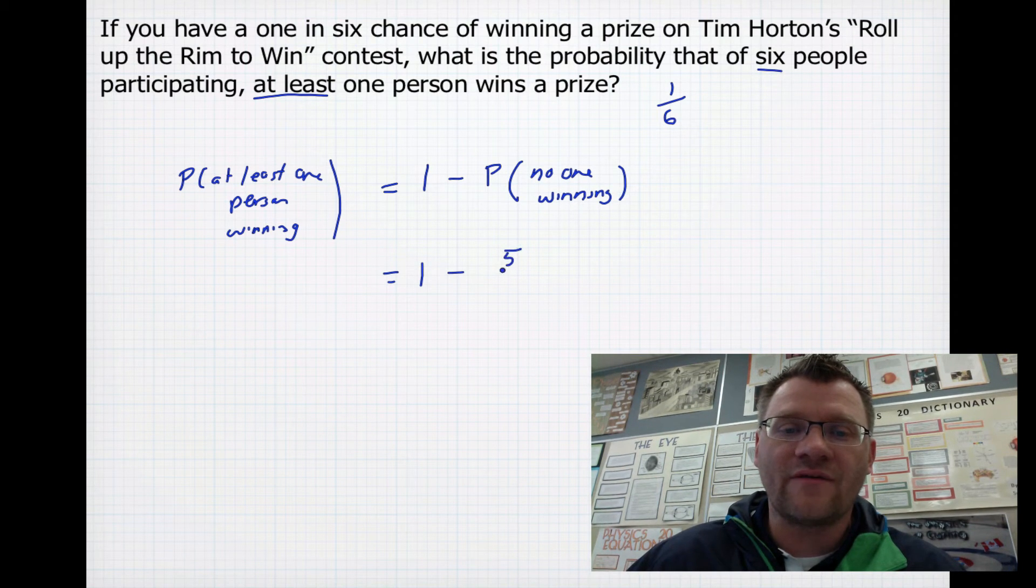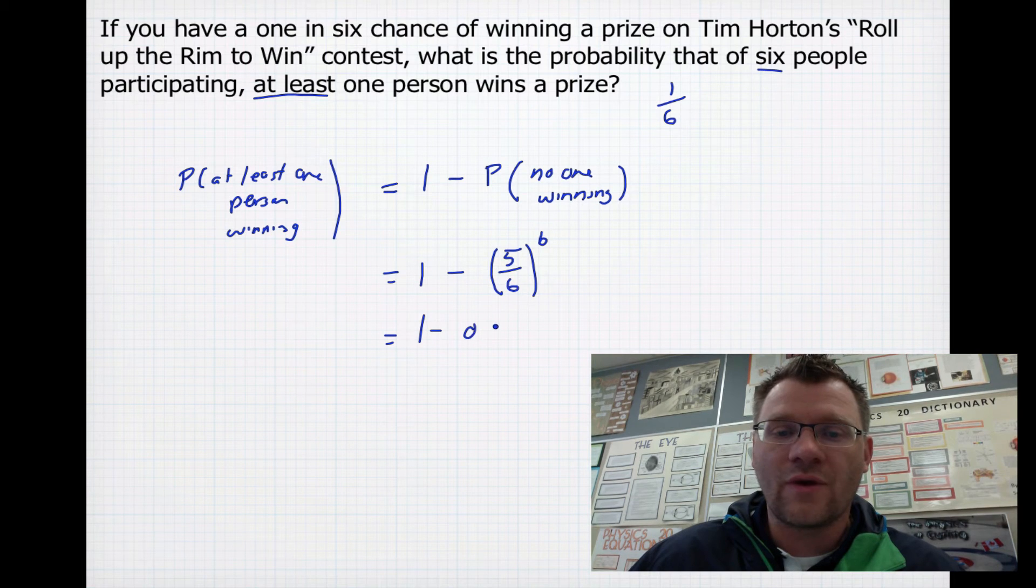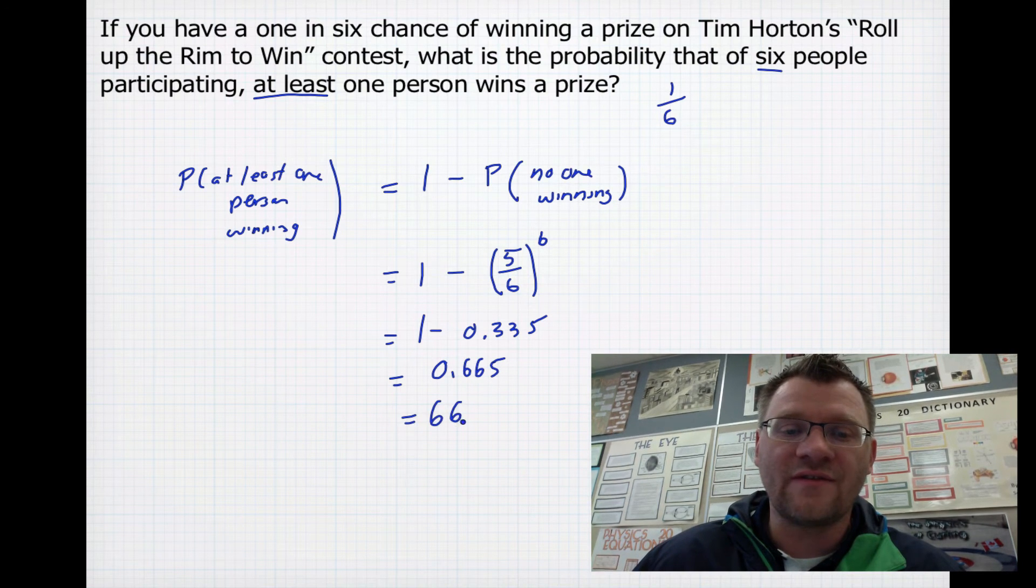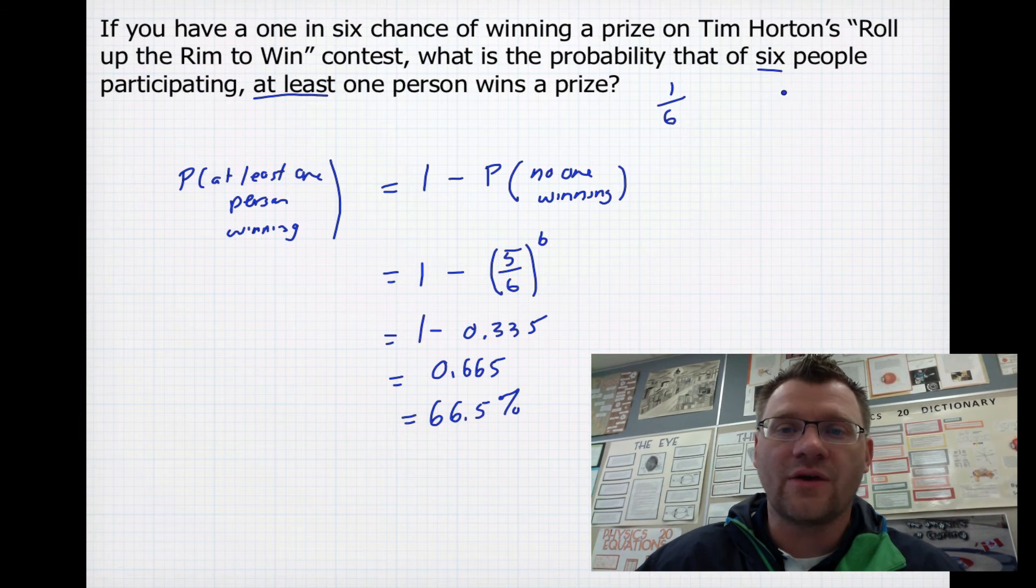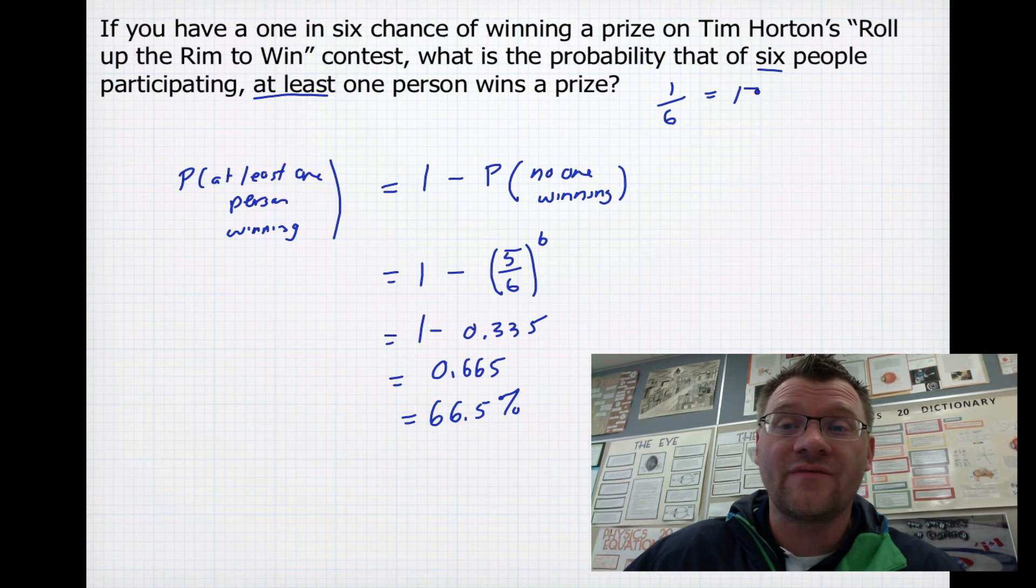So since we have a 5 in 6 chance, and there's 6 people, and each of those people have a 5 in 6 chance, that's just going to be 5 in 6, 6 different times. So we just write that as 5 over 6 raised to the 6th power. So when we're done, we get 1 minus 0.335, and that gives us 0.665. So you actually have a 66.5% chance that if there's 6 people in a room drinking that coffee, that one of them, at least one person, is going to win a prize. Now, that's a lot better than a 1 in 6 chance, which is about 17%.